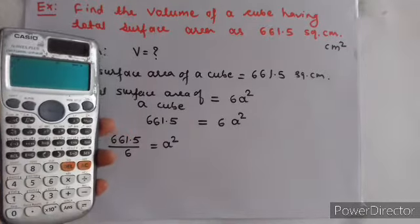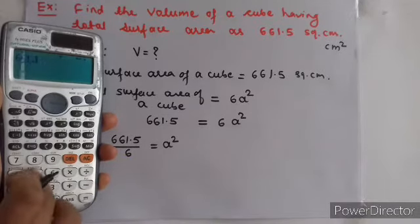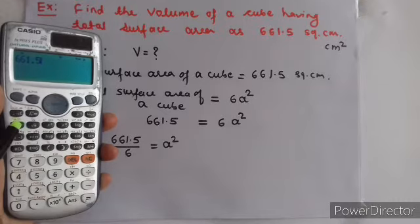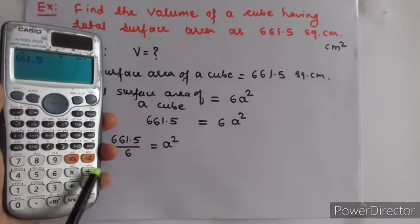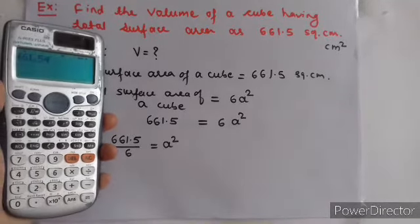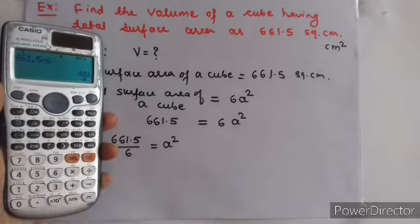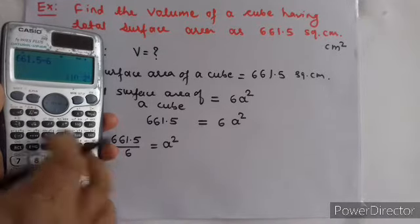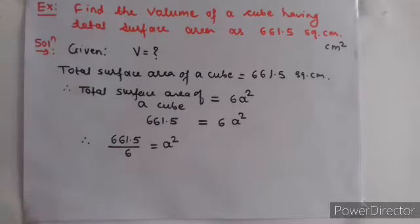अब हम calculator में यह value डालेंगे. 661.5 divided by 6. इसके लिए आप division का बटन use कर सकते हैं, या फिर numerator-denominator के लिए एक अलग बटन भी दी हुई है. 661.5 ÷ 6 करने के बाद calculator fraction में बता रहा है, तो हम SD की बटन दबाएंगे. तो answer आता है 110.25. So यहाँ पे लिखेंगे: 110.25 = a².